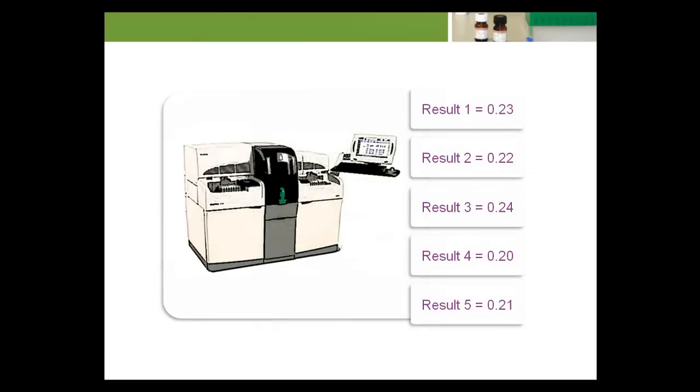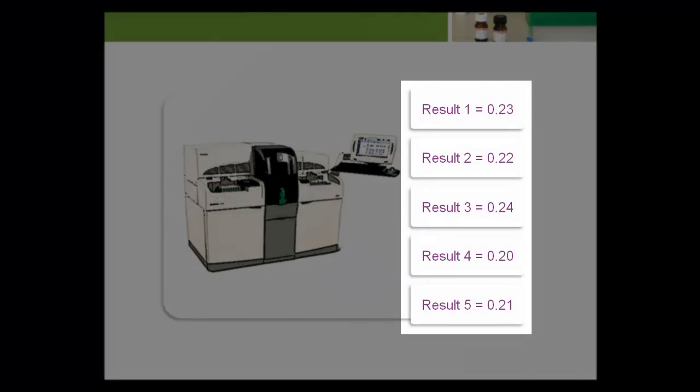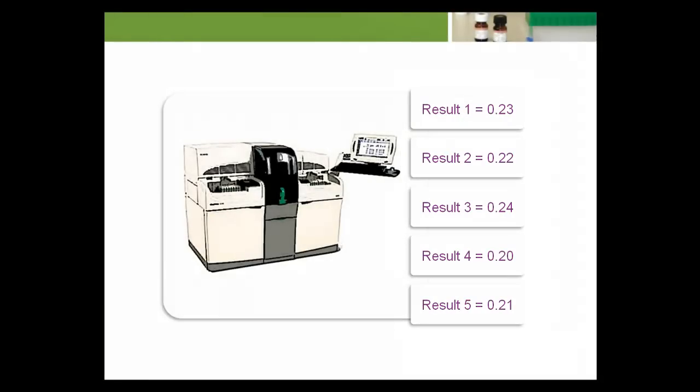Each time an analytical module produces a result, that result contains a certain amount of random measurement error. This random measurement error can make the result higher or lower than it should be, so that if the same specimen is analyzed multiple times, multiple results are produced. The variation in results between multiple evaluations of the same specimen is a function of the analytical imprecision of the module that can be quantified by computing the coefficient of variation, or CVA, of the module.